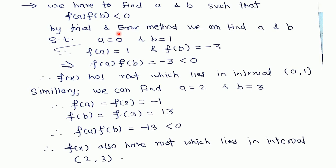I have found that a = 0 and b = 1. For f(a), that is f(0) = 1. I calculated this value by substituting x = a, and f(b) = -3. Therefore f(a) × f(b) = -3, which is less than 0. Therefore by Intermediate Value Theorem, f(x) has a root which lies in the interval (0, 1).